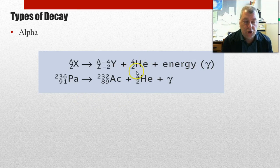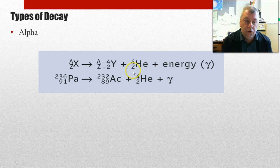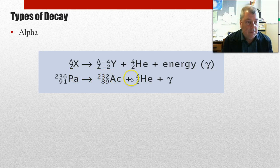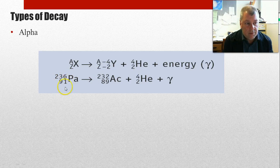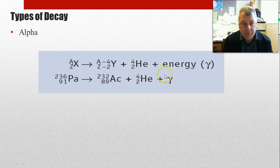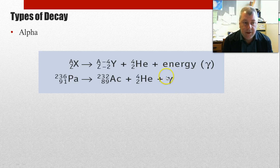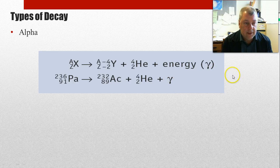So alpha decay, you get the emission of a helium nucleus, so two protons, two neutrons getting emitted from the nucleus. And so when we're doing atomic or nuclear reactions, we've got to work on the top. So the top numbers here, so 236 has to equal the sum of the numbers here, and the number on the bottom here, which is the number of protons, has to equal the number of protons on this side. So we have to balance it all out. And we often put energy here because more than likely excess energy will be given off in the form of a photon.